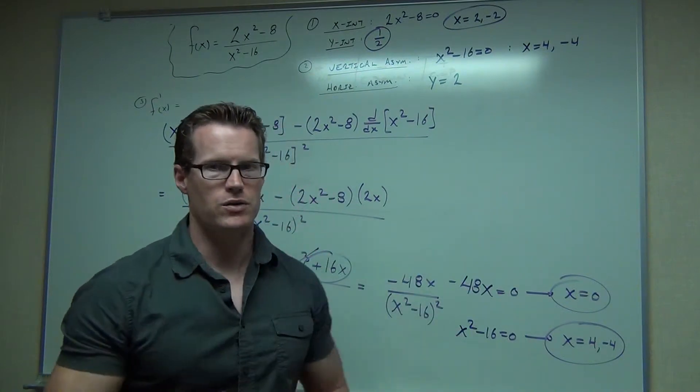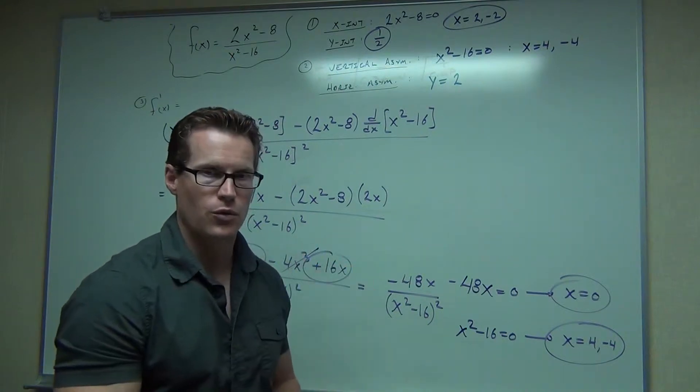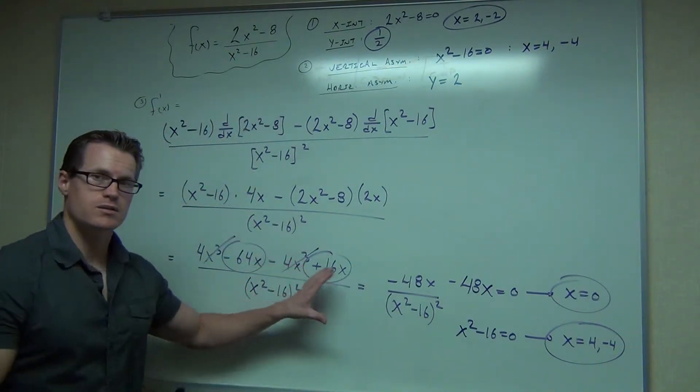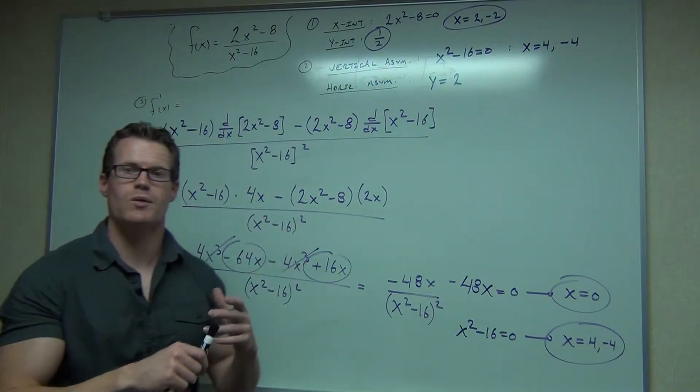So three critical values that we're going to be putting on our first derivative table. We've got our zero, our 4, and negative 4. Take a look at this. Hopefully you've written this down. I'm going to erase this right now and write it right up here. That way I can work on my second derivative.